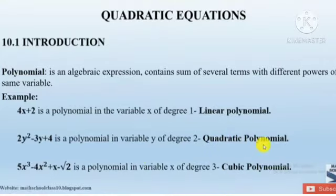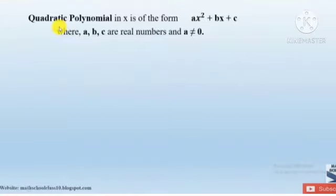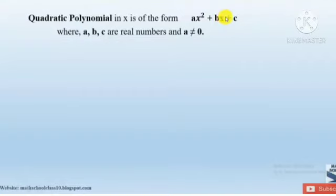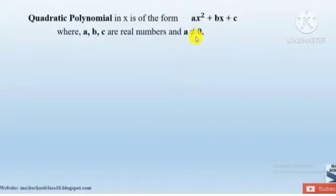Now, when this quadratic polynomial is equated to 0, we get a quadratic equation. The quadratic polynomial is of the form ax squared plus bx plus c, where a, b, c are real numbers and a is not equal to 0. When the general form ax squared plus bx plus c is equated to 0, we get a quadratic equation. Understood?